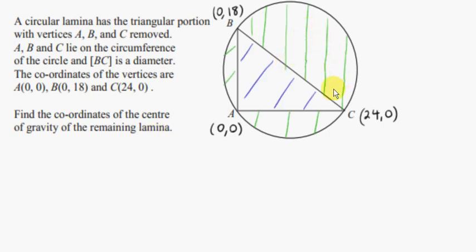We want the center of gravity of the green part — that's the circle with the triangle removed. The green part is an irregular shape, and its center of gravity might be somewhere around here. That would be the balance point: if we were to balance the green part at this point, it's the only point at which it would balance if we rested it on a pinhead. The sum of the moments of the gravitational forces about this point would be zero.